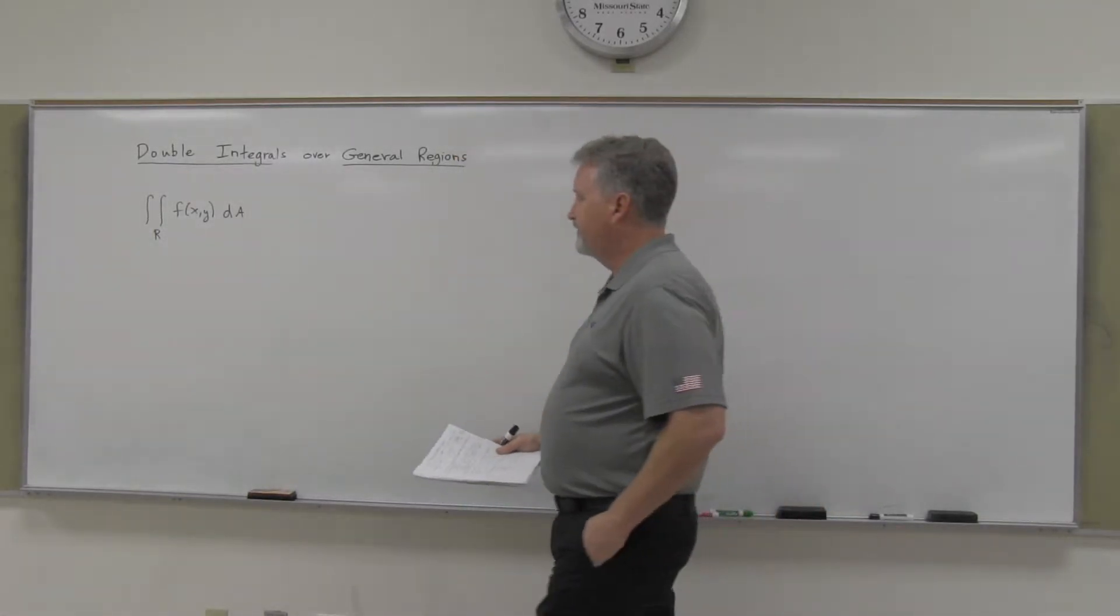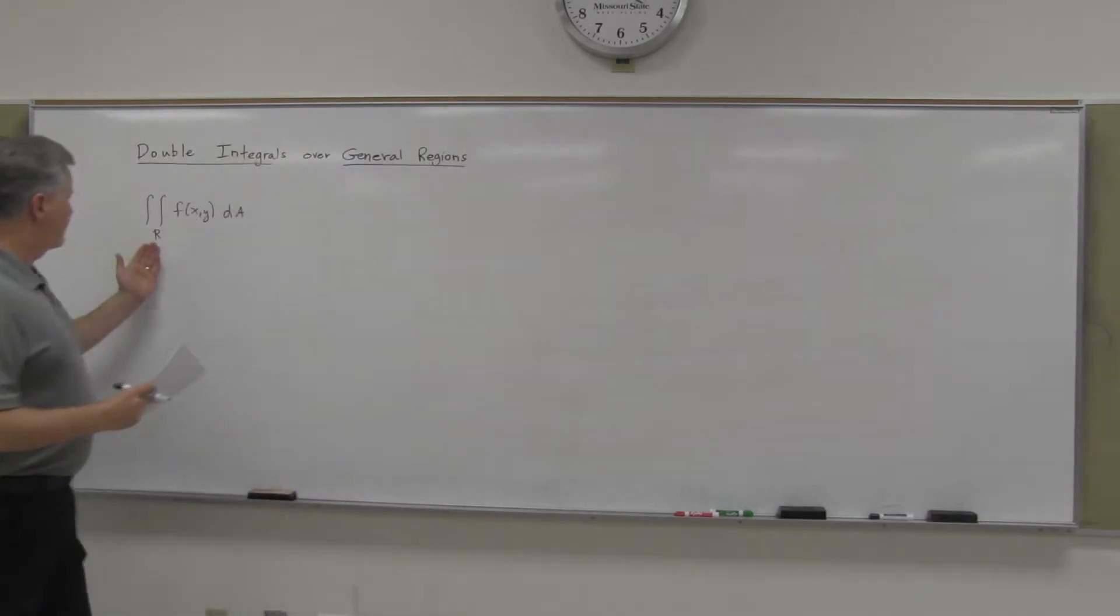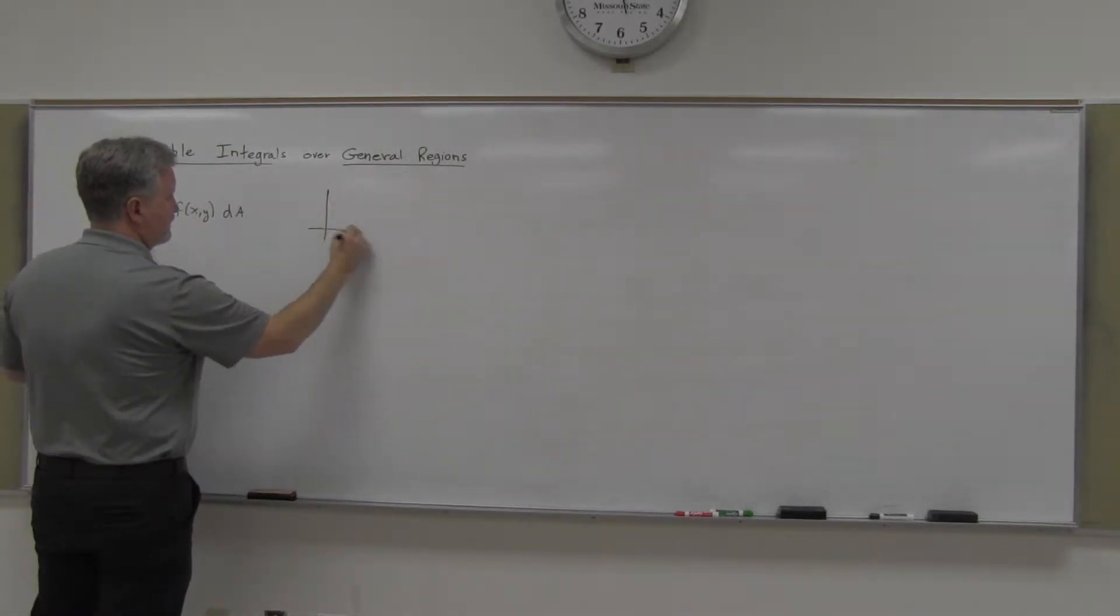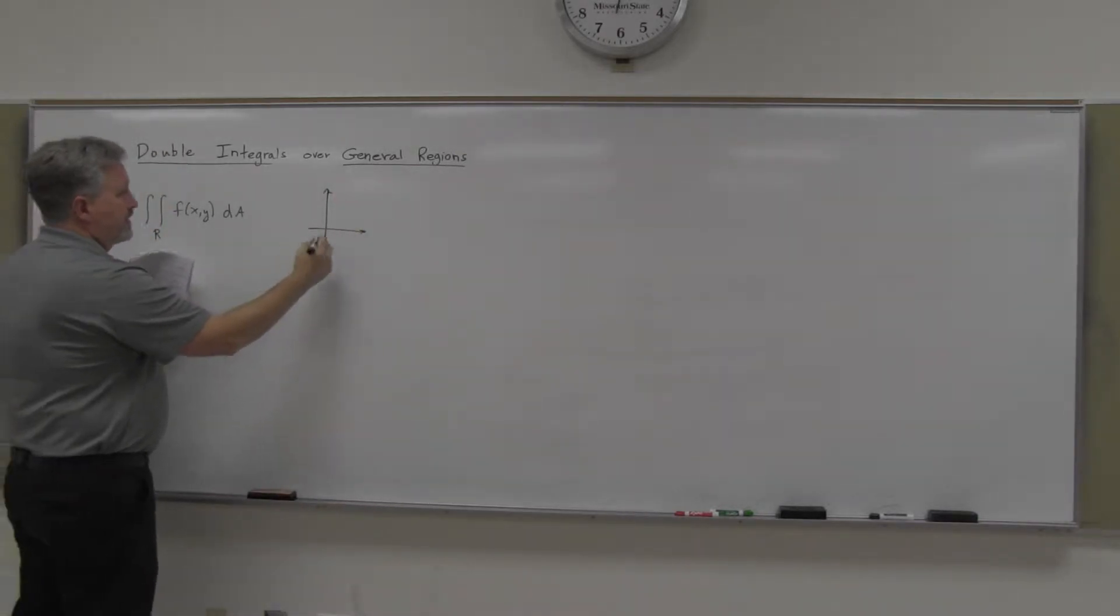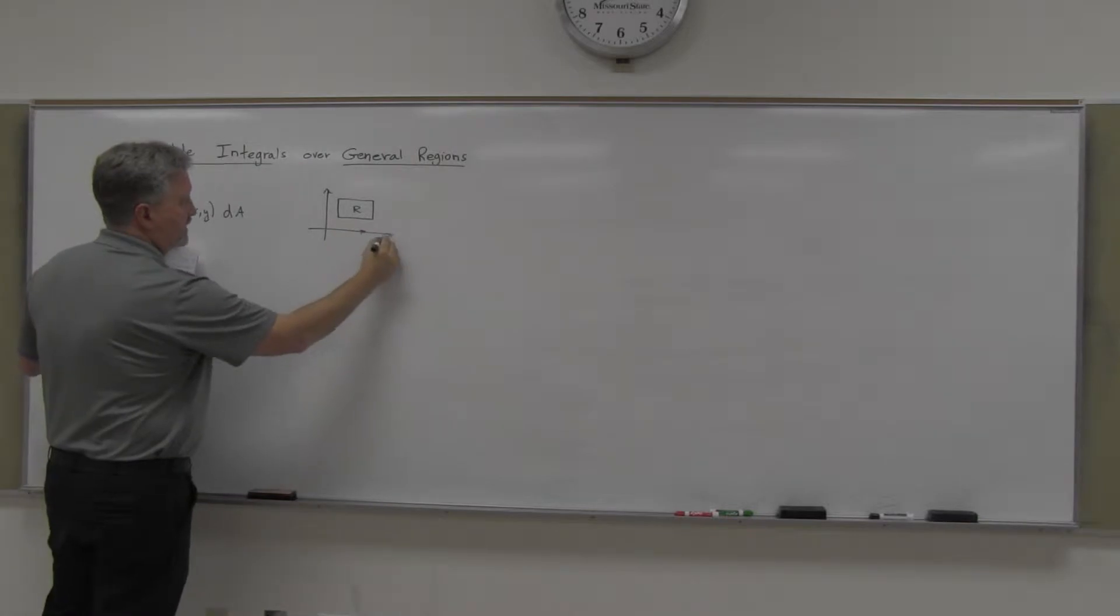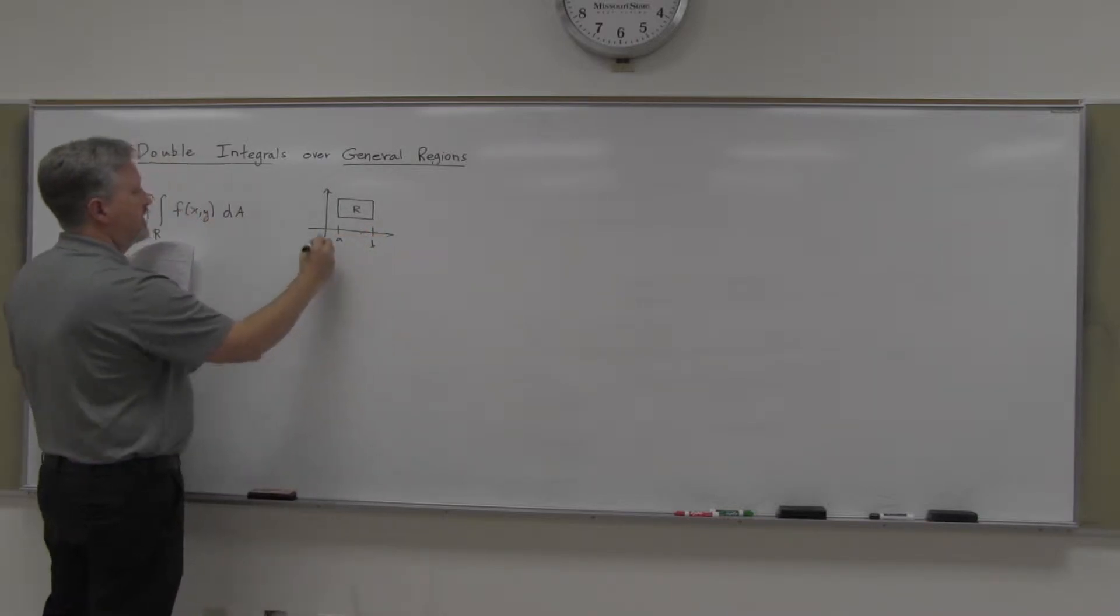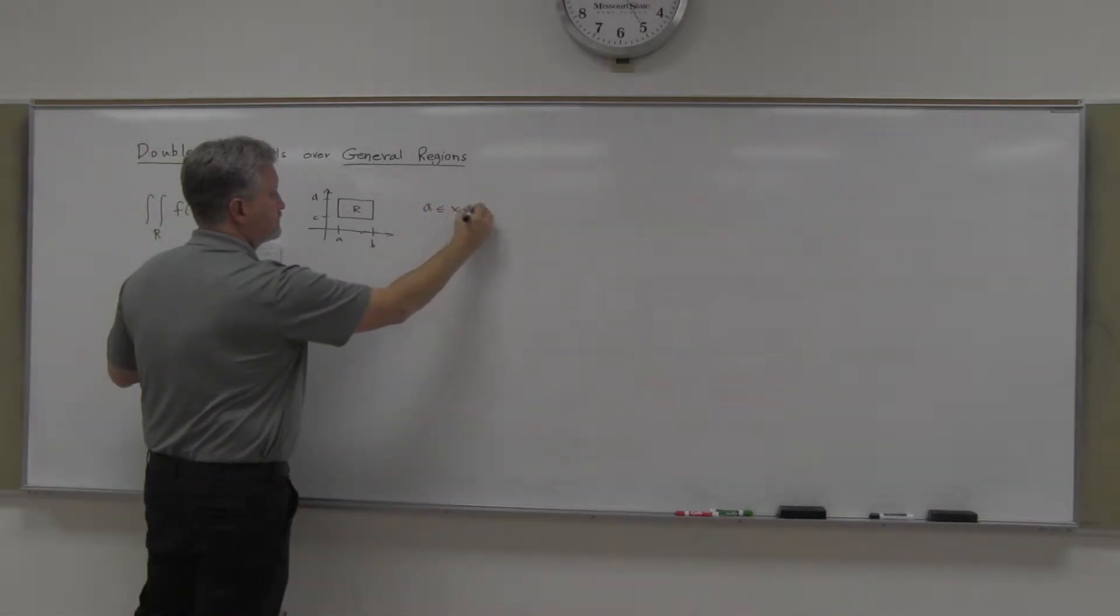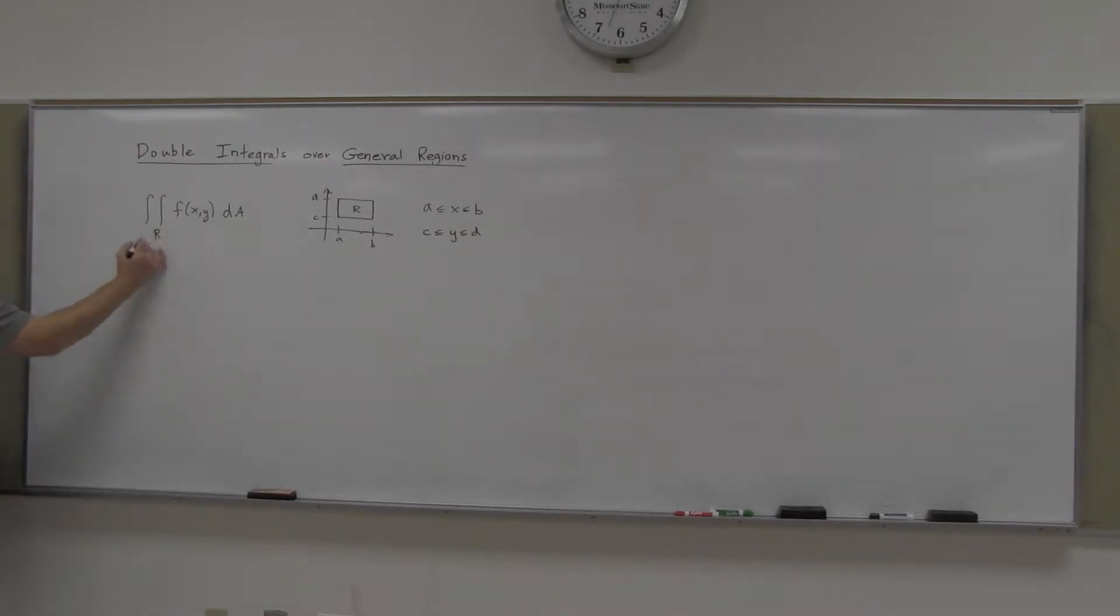Last time we talked about double integrals over a rectangular region R. I suppose they chose that because we're integrating over a rectangular region. And the X's were going from A to B, and the Y's were going from two other numbers, C to D. That's what we did in the first section.